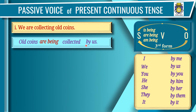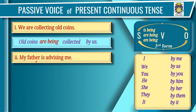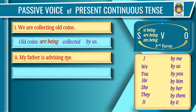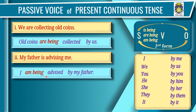Sentence 2: 'My father is advising me.' Subject: 'my father'; verb: 'is advising'; object: 'me'. Step one: 'me' is objective form; write its subjective form 'I' at the beginning. Step two: write 'by my father'. Step three: third form of 'advising' is 'advised'. Step four: because of 'I', write 'am being' — 'I am being advised by my father'.